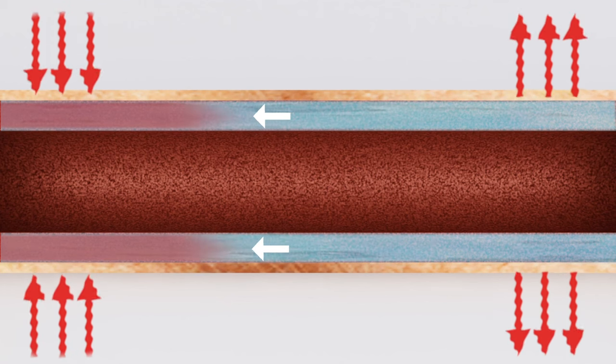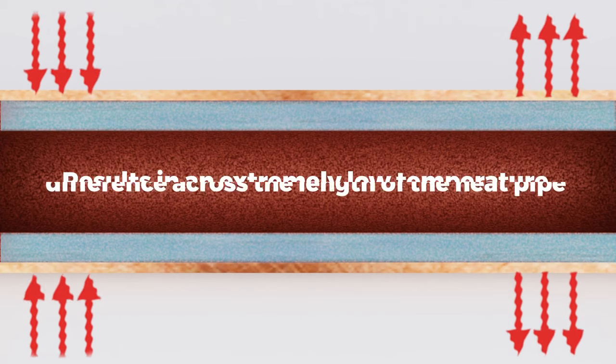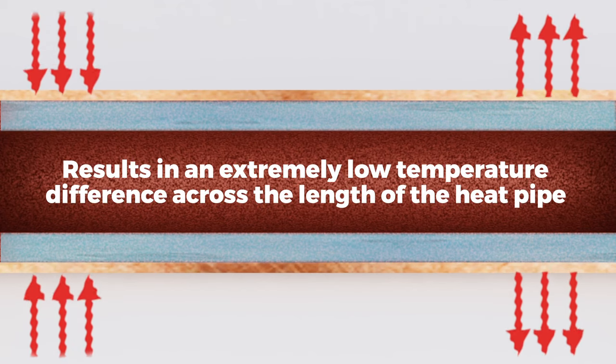The wick structure then passively pumps the fluid back to the evaporator. This entire operation results in an extremely low temperature difference across the length of the heat pipe.